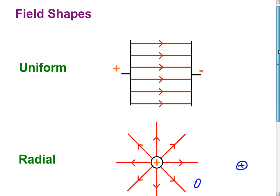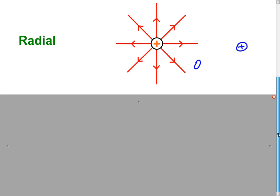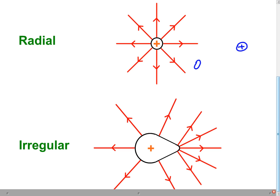So we've got a uniform field, a radial field. Now, not all objects are going to be either perfectly flat or perfectly spherical. So here we've just got a totally irregular object, which also has a positive charge. And you can also map out the field using a small positive test charge. And this is the shape you get.